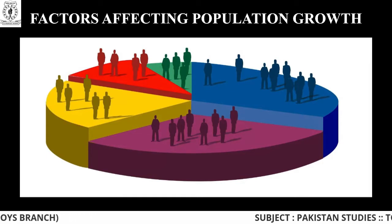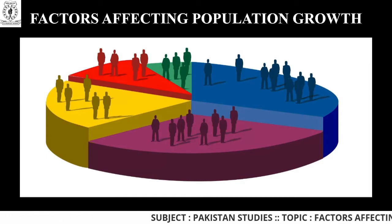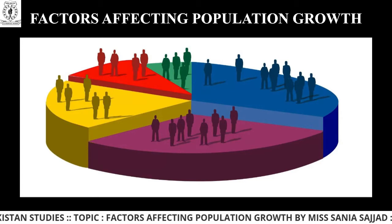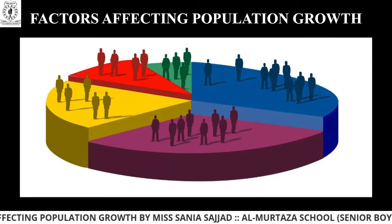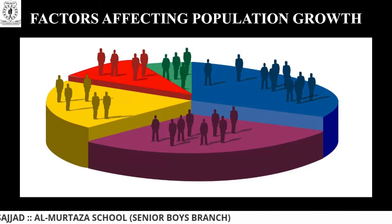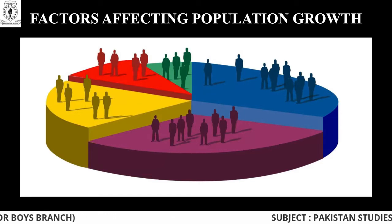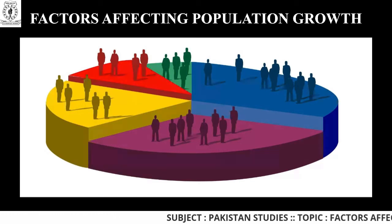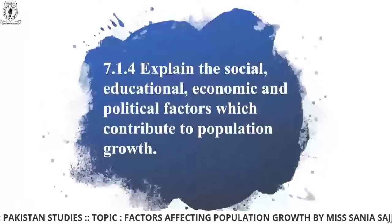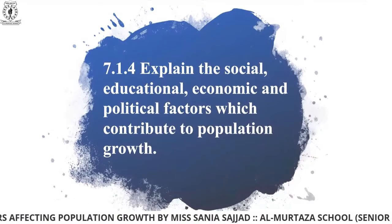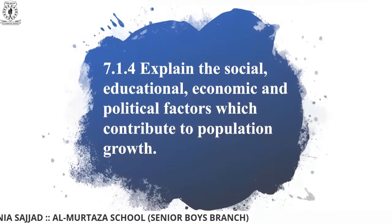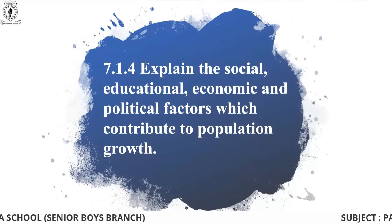There is a picture on your screen showing multiple people standing on different colors of a pie chart. We are going to discuss about how all of these people are getting affected by population growth. SLO number 7.1.4: explain the social, educational, economic, and political factors which contribute to population growth.